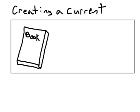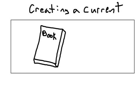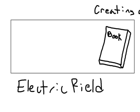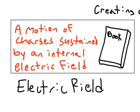So how do we create a current? Imagine you have a book and you want to push it across the table at a constant speed. In order to push that book at a constant speed, you have to push with a constant force. In a conductor, this constant force is provided by an electric field. The electric field exerts a force on the electrons and they begin to move and collide with one another. These collisions transform the kinetic energy of the electrons into thermal energy in the conductor, making it a bit warmer. So more specifically, a current is the motion of charges sustained by an internal electric field.